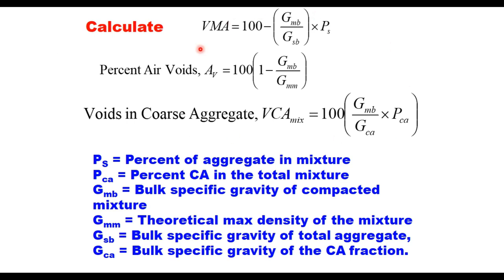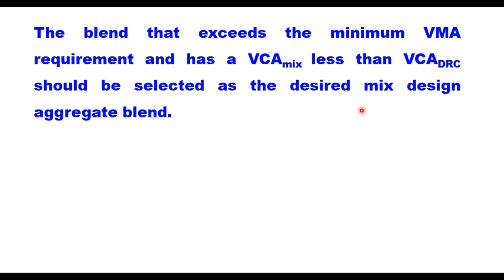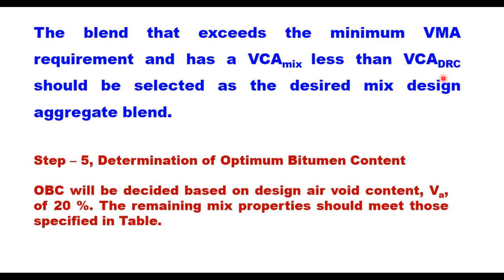Step 4: VMA is voids in mineral aggregate and VCA is voids in coarse aggregate. The design blend will be the one that has VMA greater than the minimum requirement and VCA less than VCA in dry-rodded condition (VCA_DRC).